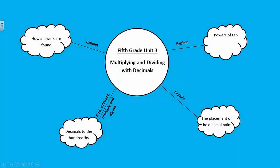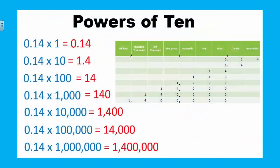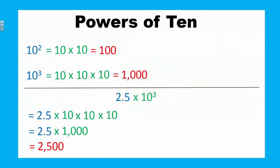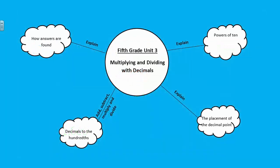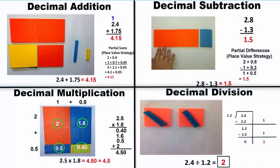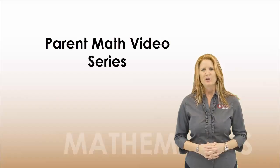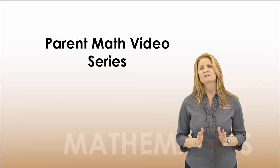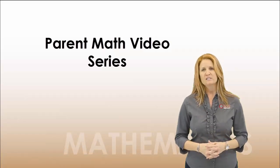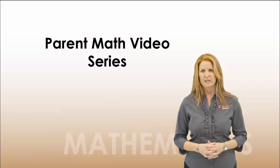In this unit, students analyze patterns to determine the placement of the decimal point and the number of zeros in the product. Additionally, students use whole number exponents to denote powers of 10. In the final part of the unit, students perform decimal computation with the four operations using concrete models or representations and explain their reasoning. Thank you for your time. We know that when families and schools work together, student success increases. Please visit the Cobb County Math Department website for additional information and resources to support your student at home.